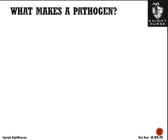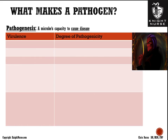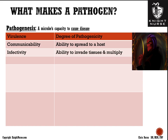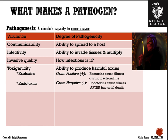Pathogenesis is the microbe's ability to cause disease, also called virulence — the degree of an organism's pathogenicity. Key factors include communicability, the ability to spread to a host; infectivity, how well the organism invades tissues and multiplies; and invasive quality, how often it successfully causes infection after encountering a host. Toxigenicity is the ability to produce harmful toxins — exotoxins from gram-positive bacteria cause illness during the bacterial life cycle, while endotoxins from gram-negative bacteria are released upon bacterial death.